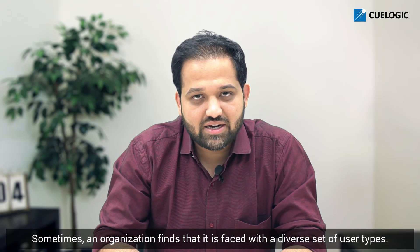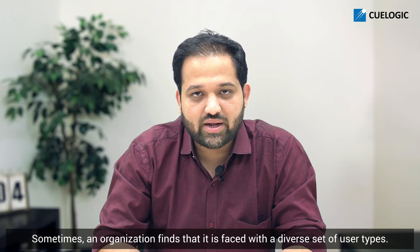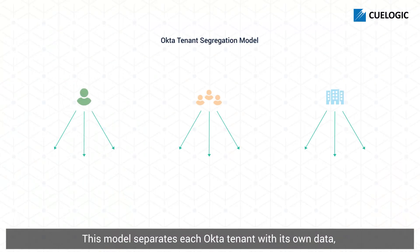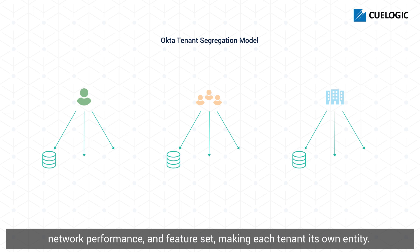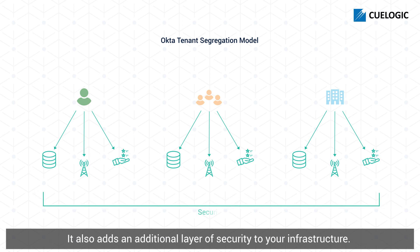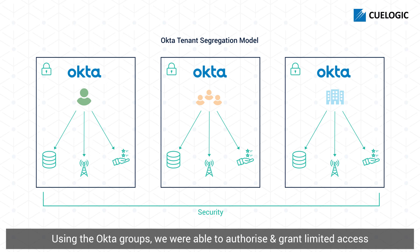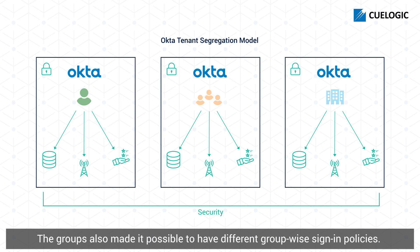Sometimes an organization finds that it is faced with a diverse set of user types. In such cases, you can consider the Okta tenant segregation model. This model separates each Okta tenant with its own data, network performance, and feature set, making each tenant its own entity. It also adds an additional layer of security to your infrastructure. With our client, we ensured data segregation by adding separate Okta groups for each tenant and adding its users to that specific group. Using the Okta groups, we were able to authorize and grant limited access to the user. The groups also made it possible to have different group-wise sign-in policies.